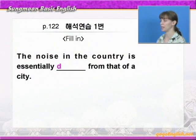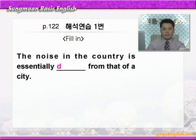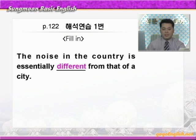'The noise in the country is essentially blank from that of a city.' 시골에서의 소음은 essentially — 본질적으로 — 뭐뭐와 blank하다. 여기 that은 앞에 the noise를 받는 대명사니까 도시의 소음과는 본질적으로 blank하다. 본문에서 다른 종류의 소음을 찾아 시골로 간다고 했으니까 시골의 소음은 도시의 소음과 본질적으로 다르다. 빈칸에는 '다른', 즉 different가 들어가면 되겠습니다.